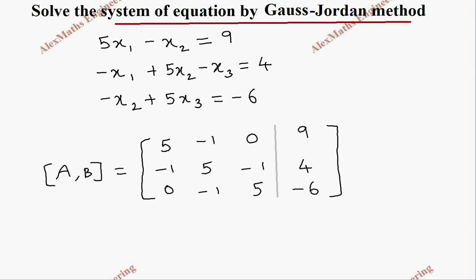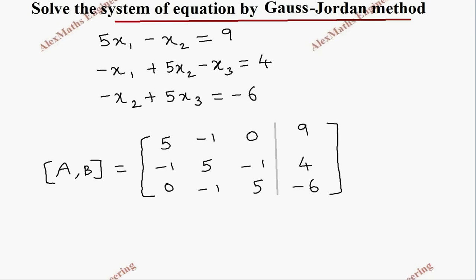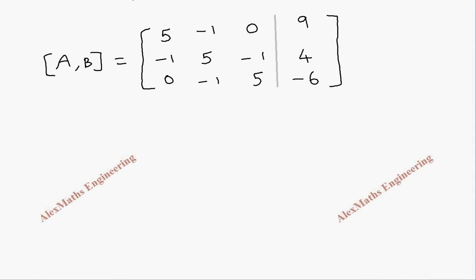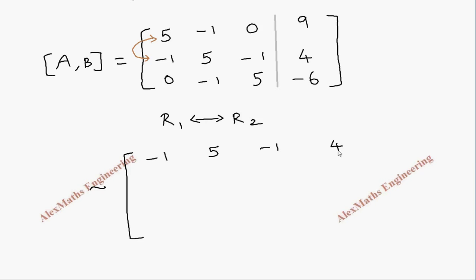Now we have the augmented matrix. To make the process easier, let's interchange row 1 and row 2. After the interchange, the augmented matrix becomes: row 1 is [-1, 5, -1 | 4], row 2 is [5, -1, 0 | 9], and row 3 remains as it is.